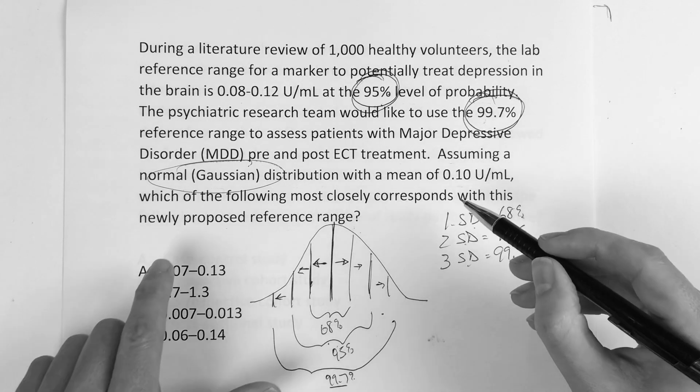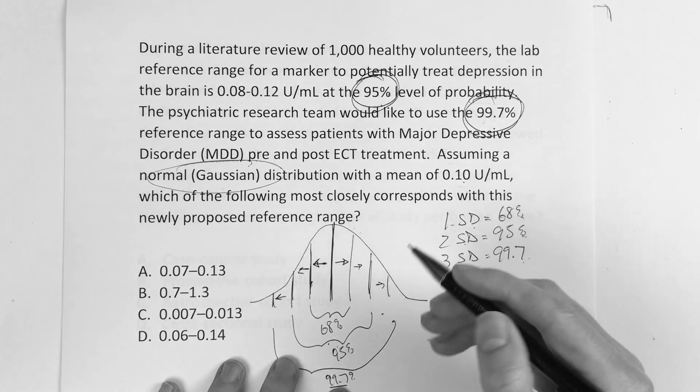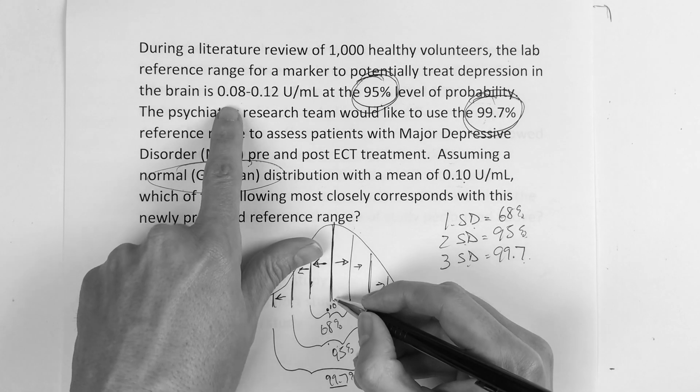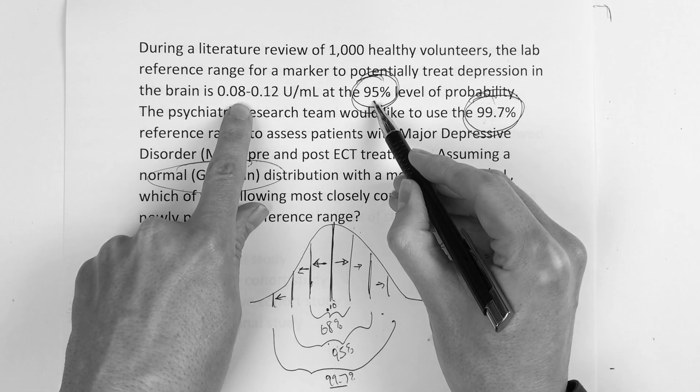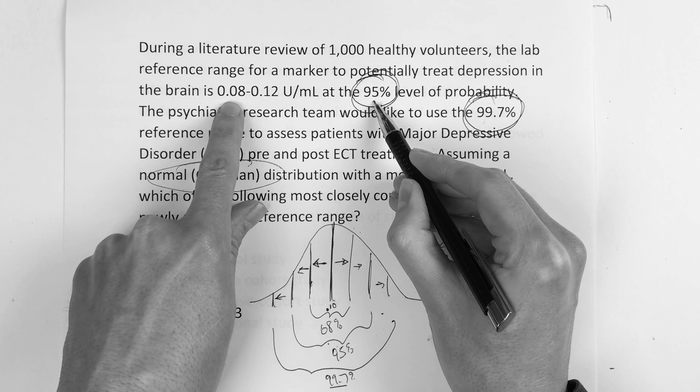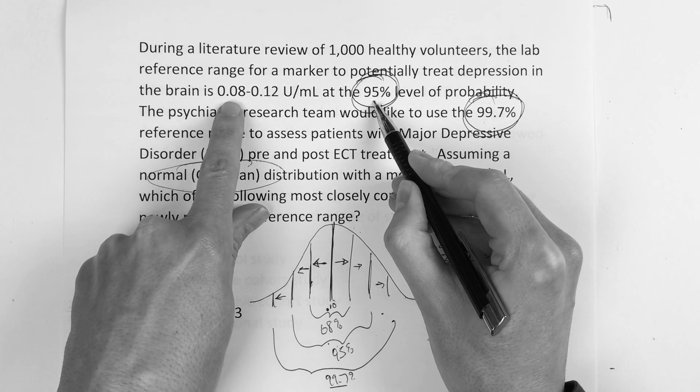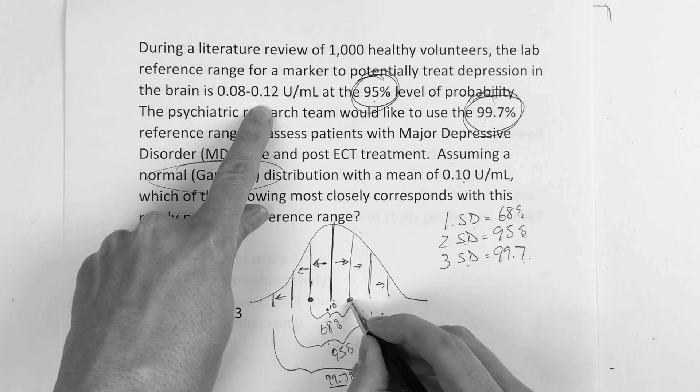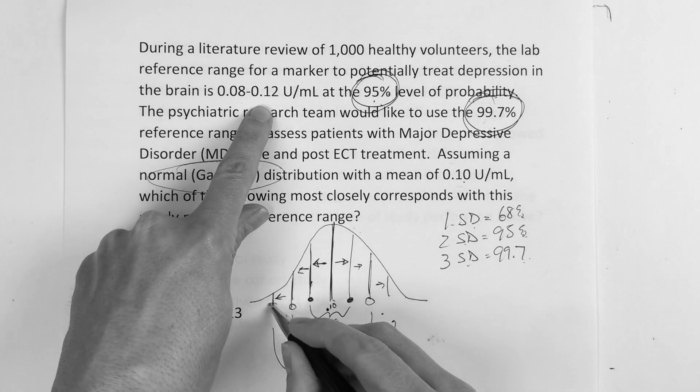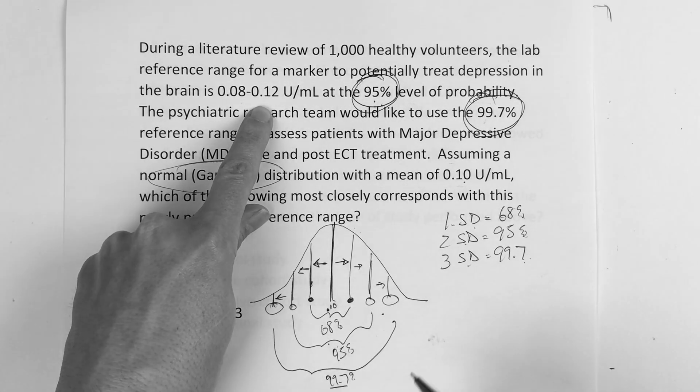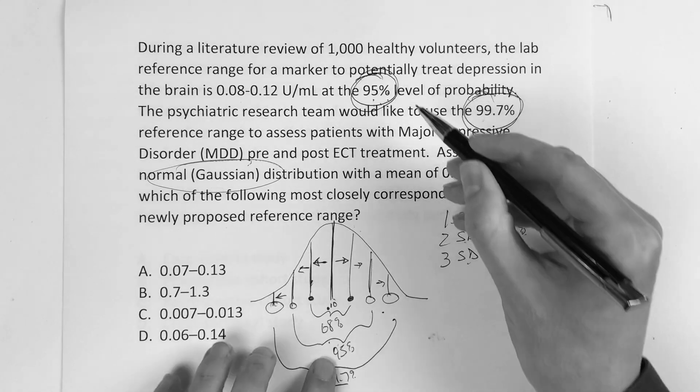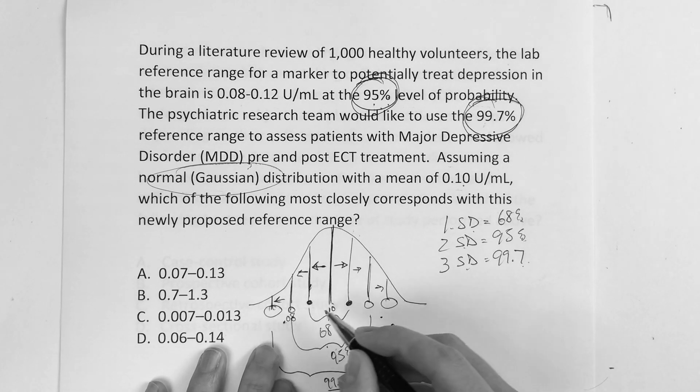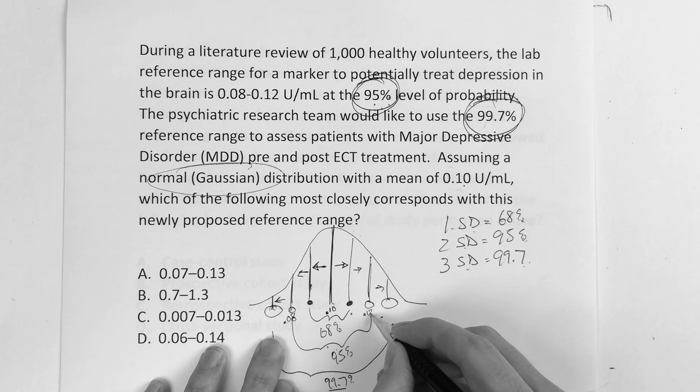Now they are essentially telling you that the mean is 0.1 in this scenario. So the mean is 0.1, and the distribution for the 95% is actually 0.08 to 0.12. It's 95%, so that's actually two standard deviations away. So that's 0.08 and 0.12.